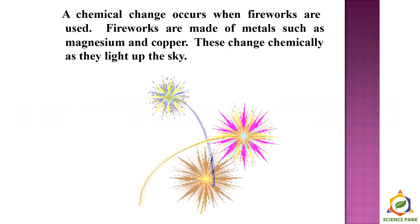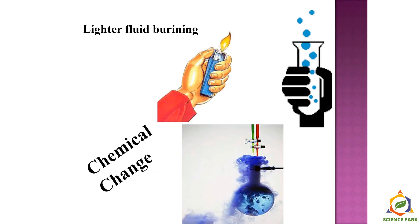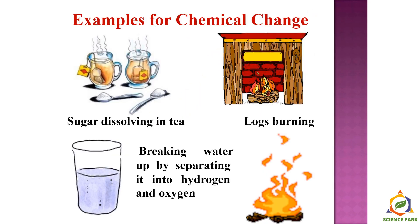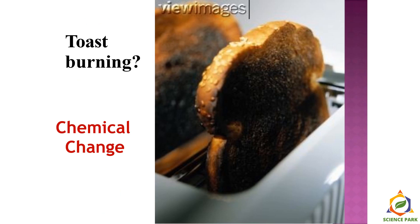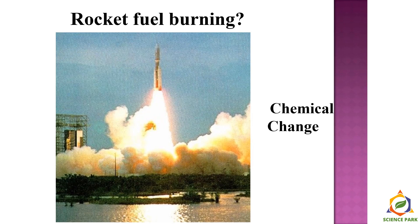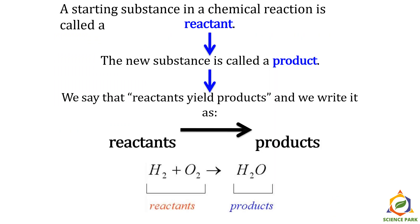A chemical change occurs when fireworks are used. Fireworks are made up of metals such as magnesium, copper, nickel, strontium, and lithium — these change chemically as they light up in the sky. Lighter fluid burns — this is a chemical change. Breaking water by separating it into hydrogen and oxygen is also a chemical change. Toast burning, rocket fuel burning, and metal rusting are all chemical changes we encounter in daily life.